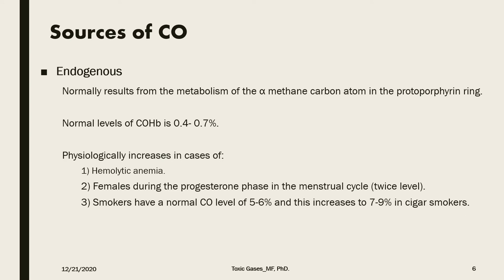When we talk about sources of carbon monoxide, we have endogenous sources, which normally result from the metabolism of the alpha-methane carbon atom in the protoporphyrin ring. This leads to a normal level of carbon monoxide in the blood between 0.4 to 0.7 percent. However, there are some cases where there is an expected physiological increase: in hemolytic anemia, in females during the progesterone phase of the menstrual cycle it doubles the level. Smokers also have higher levels of carbon monoxide, ranging from 5 to 6 percent, and it might reach 7 to 9 percent with cigar smokers.